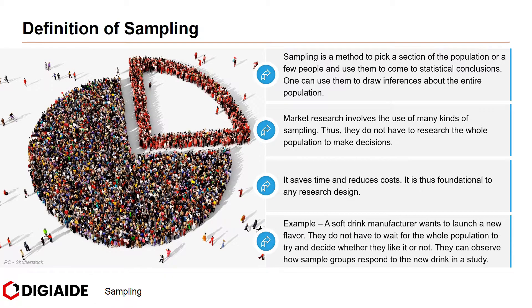For example, a soft drink manufacturer wants to launch a new flavor. They do not have to wait for the whole population to try and decide whether they like it or not. They can observe how various sample groups respond to their new drink in the study.